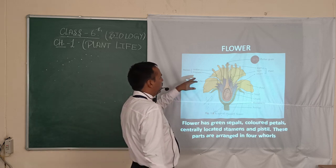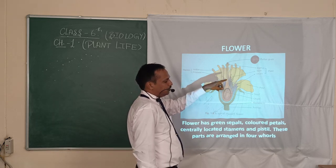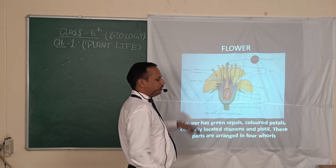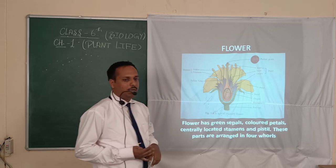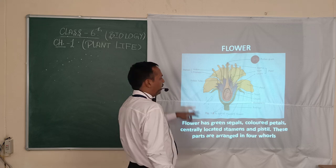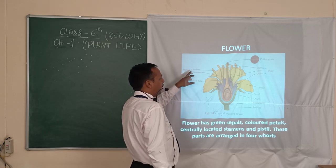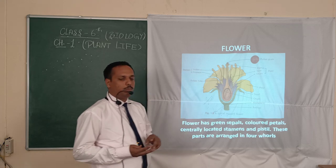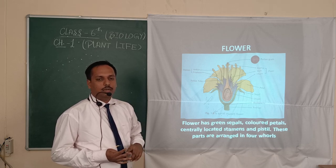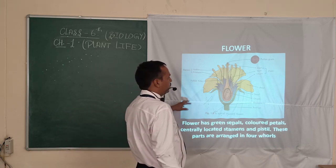Now we are going to look at the stamen. Like the pistil is the female reproductive part, the stamen is the male reproductive part. It consists of the anther and filament. The anther contains pollen grains, which are the male gametes for reproduction.